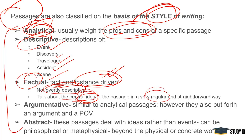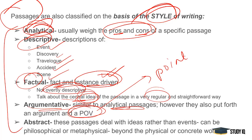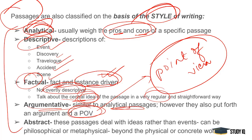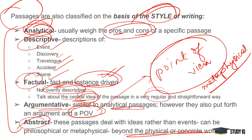Argumentative passages are quite similar to analytical essays and passages; however, they are kept in argument with a point of view. Argumentative passages are kept in one kind of point of view — are you for the topic or against it? What is the whole tone of the author? Abstract passages deal with non-concrete content. Metaphysical passages deal with content outside the physical world — beyond the concrete or physical world.